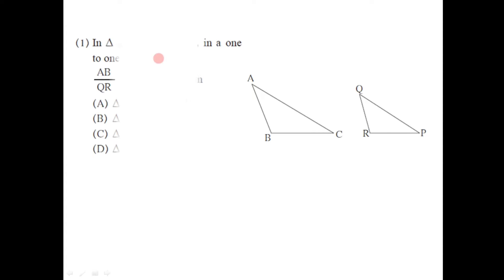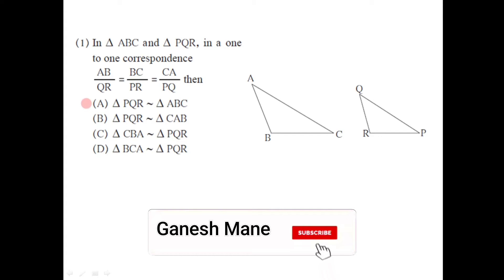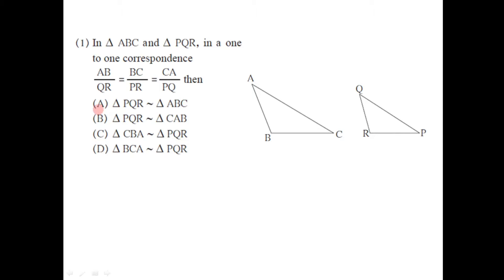A diagram is given. In triangle ABC and triangle PQR there is a one-to-one correspondence, and according to that correspondence AB/QR = BC/PR = CA/PQ. We have to choose the correct alternative A, B, C, or D. In these four alternatives, the correspondence between the vertices of the two triangles is given.